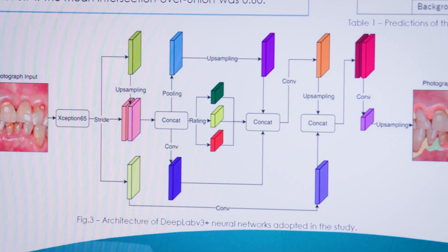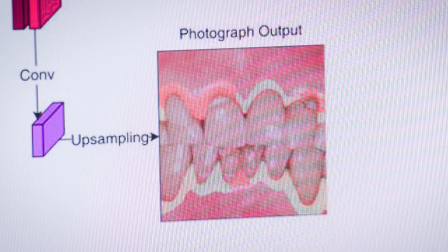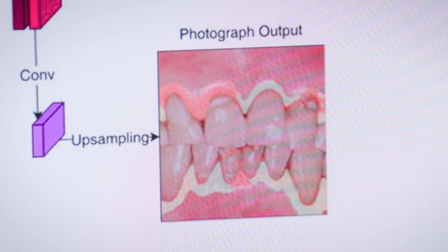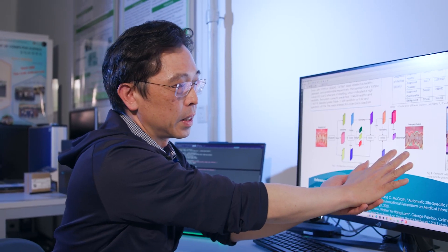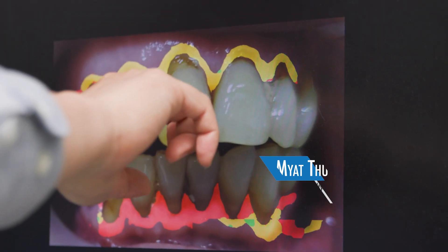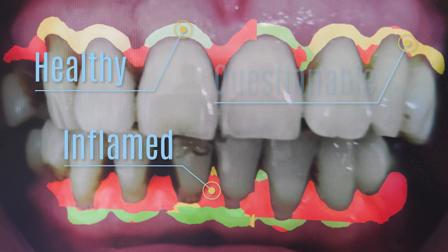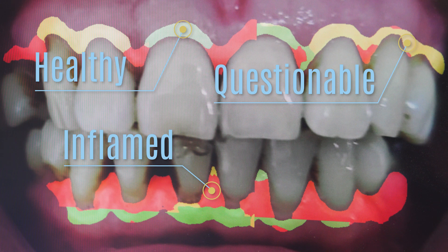Finally, it will produce a labeled output, which will be combined with the original input photo showing you the health of the gum. This is the result of our AI detecting gum inflammation. The yellow color is the questionable area, the red color is the inflamed gum area, and the green color represents the healthy gum.